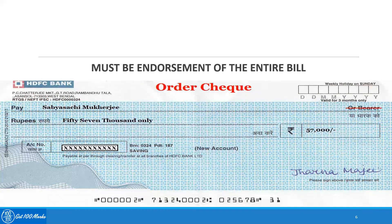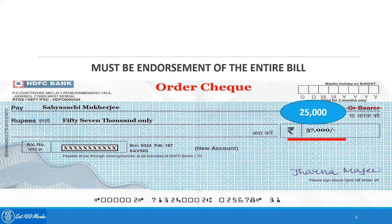The last essential of endorsement states that endorsement must be for the entire bill. Suppose Charnamaji is giving a check of 57,000 to Sabisachi, but endorses the instrument saying 'pay 25,000 to this person.' This endorsement will not be valid because it is only for a partial amount. The endorsement process requires that it can be done only for the entire amount and not for a partial amount. Thank you.